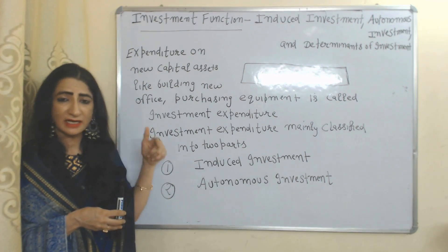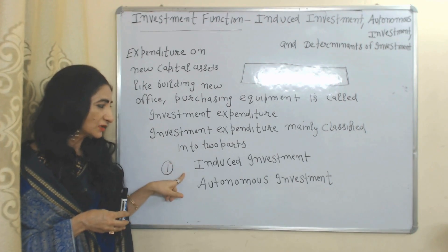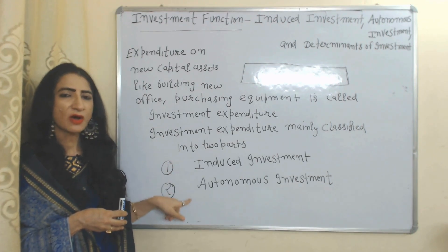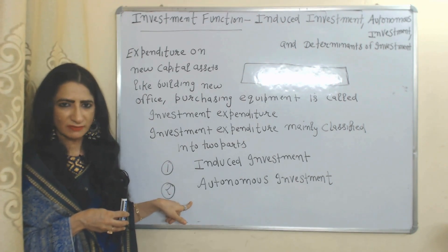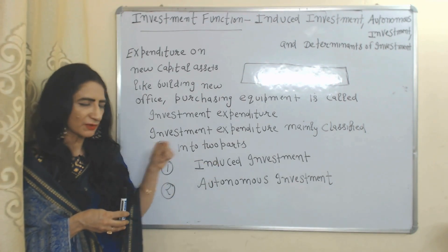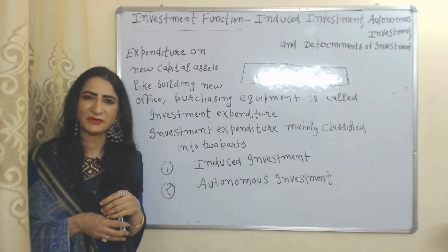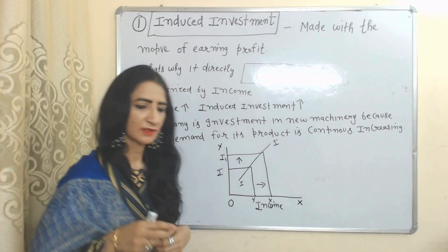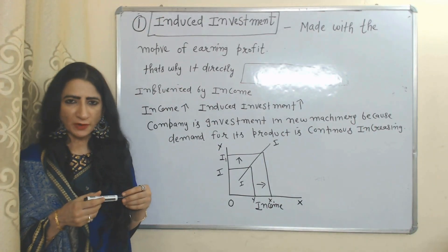Investment expenditure is mainly classified into two parts: induced investment and autonomous investment. We will discuss each one by one.